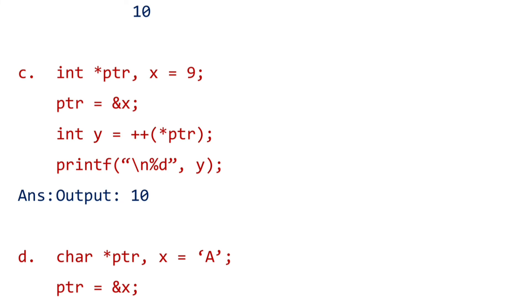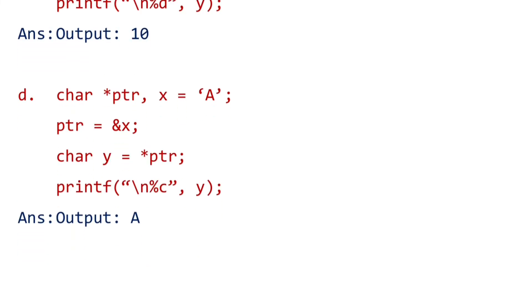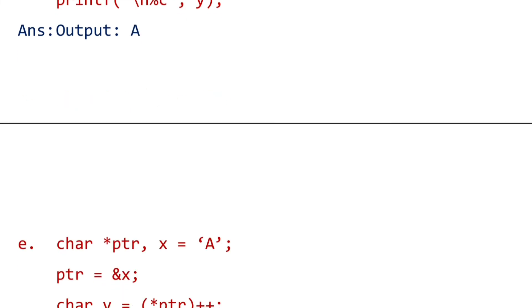Number d: Character pointer ptr, and x equals A. Pointer equals ampersand x means pointer occupied the address of x. Here character y equals star pointer. We are displaying the value of y. As the variable pointer has the address of the value x, and we also written that variable y equals star pointer, we will get the value of A. In printf statement we are writing percent c which can display a character, so we will get the value as A.